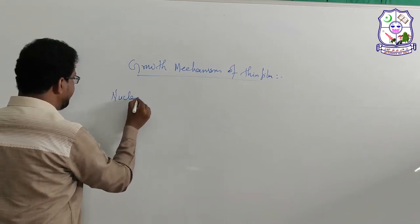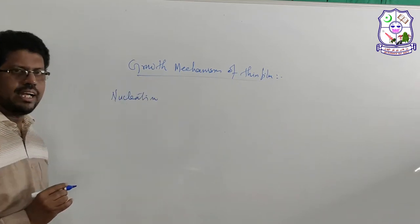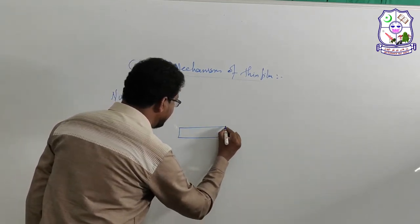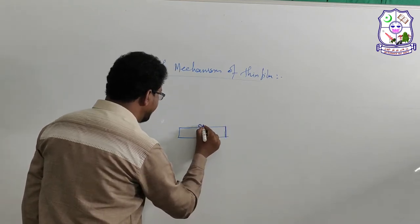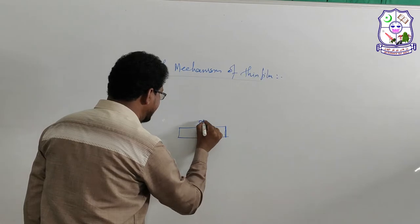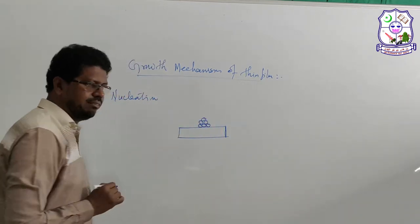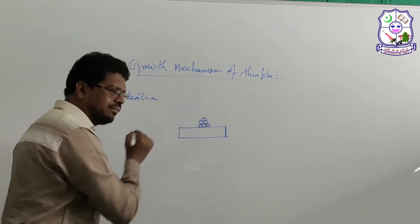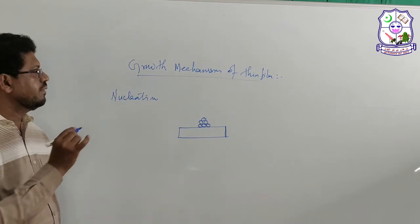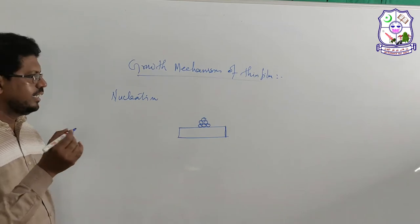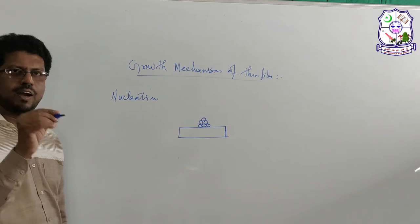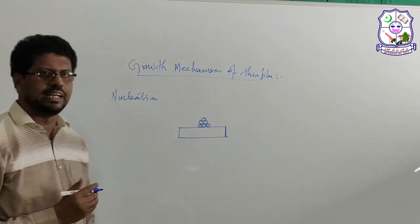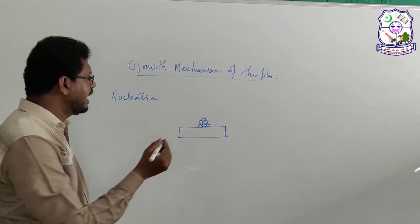The next step is called nucleation. A substrate is available, and the incoming atom starts forming a bond between the surface of the substrate and the incoming atom. A stage is reached where you have more than one atom on the surface of the substrate. For the process of growth of a thin film, there is an initiating point where some types of energy make these atoms start forming together. More than one atom joining together...